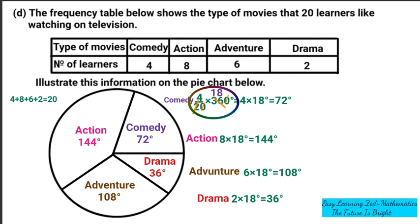If you've drawn the lines properly on the pie chart, this is how it should look. Use a protractor to measure every sector and you'll find the measurements match what we calculated. If you have questions, ask in the comment section — otherwise, let's go to the next question.